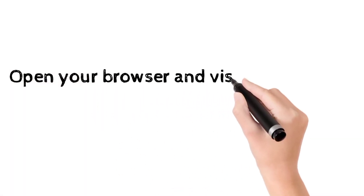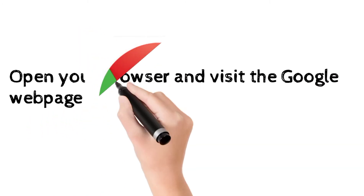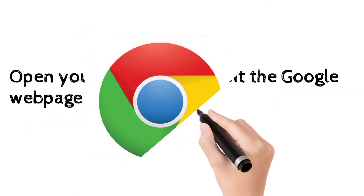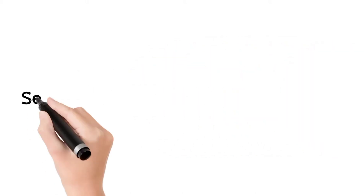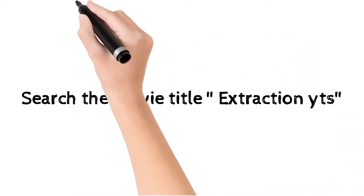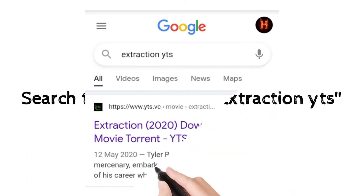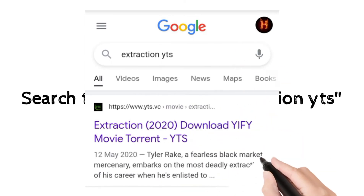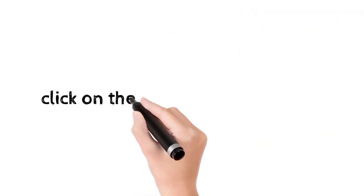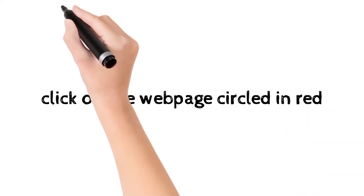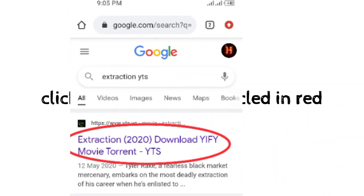Open your browser and visit the Google web page. Search the movie title Extraction YTS. Click on the webpage circled in red as shown in the video.